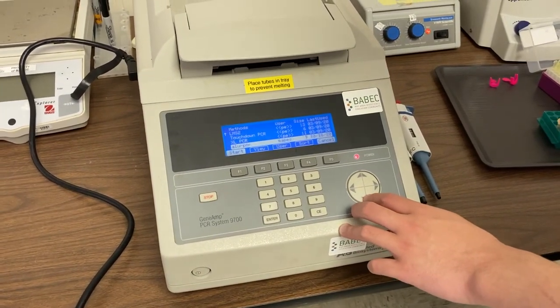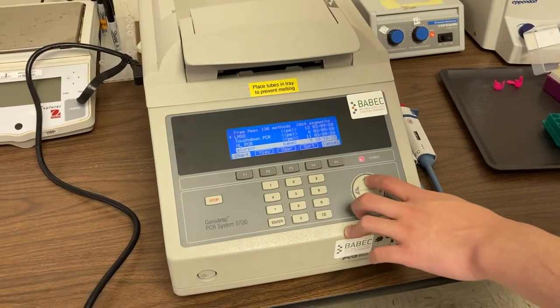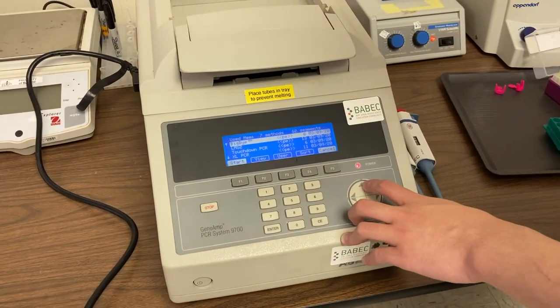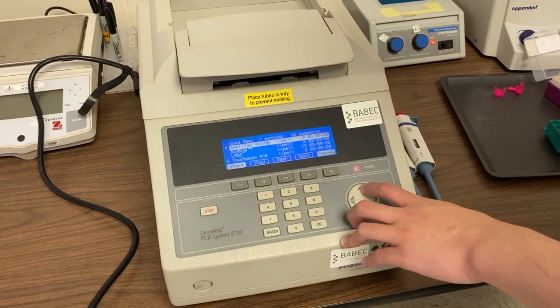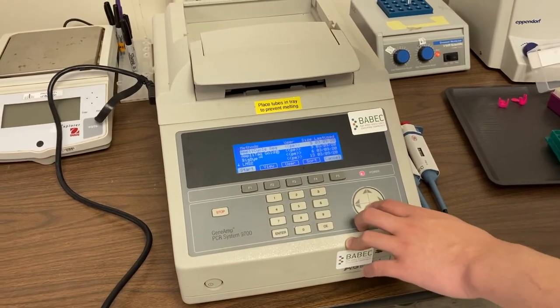Typically, we set the machine to do around 30 cycles of these specific increases and decreases. If everything works well, the TAC polymerase will make millions of copies of our target DNA.